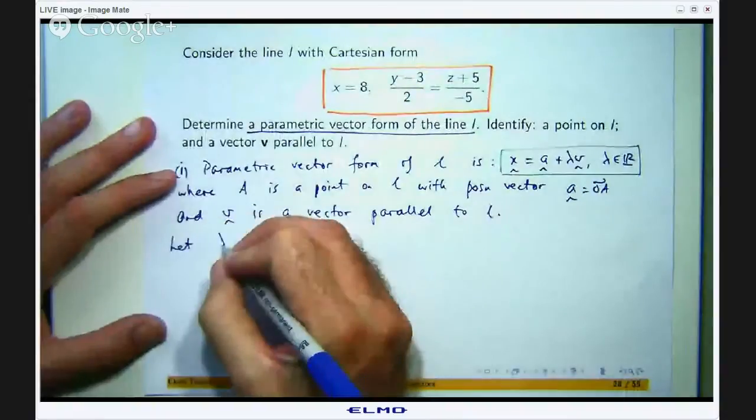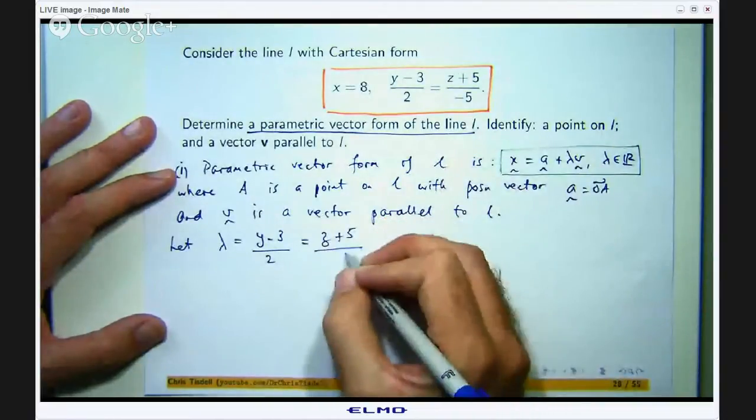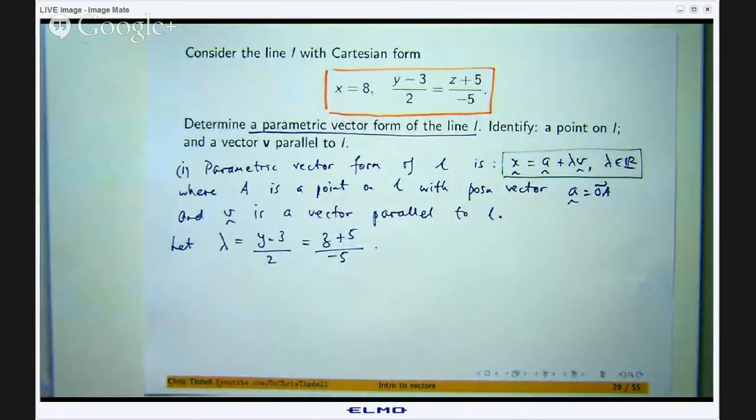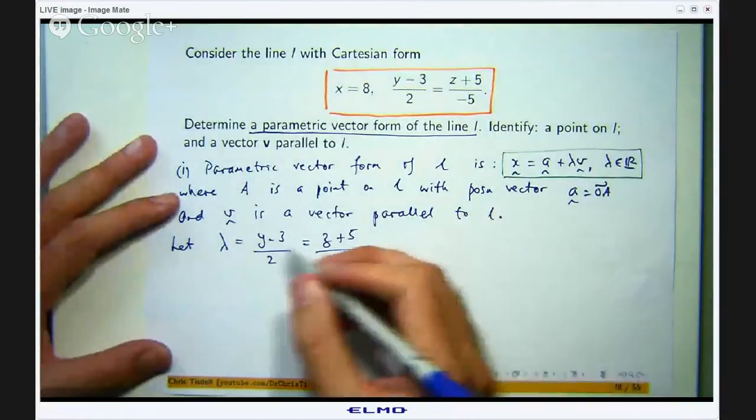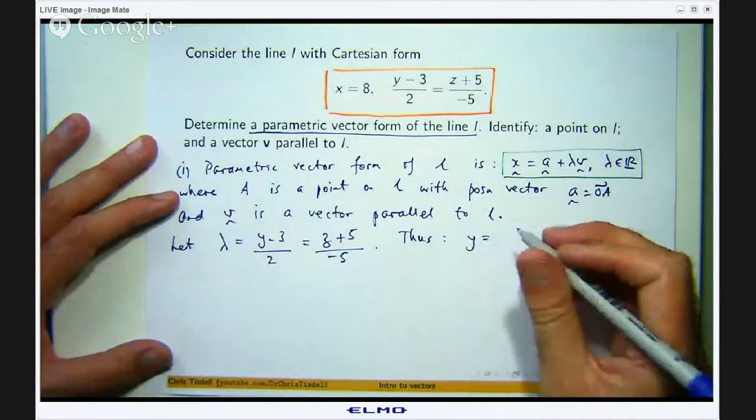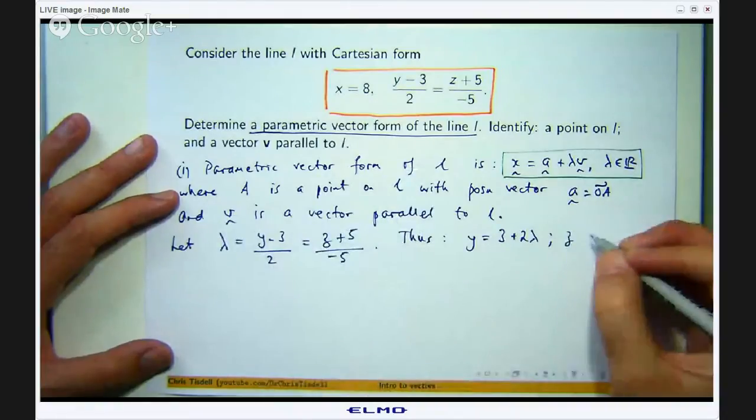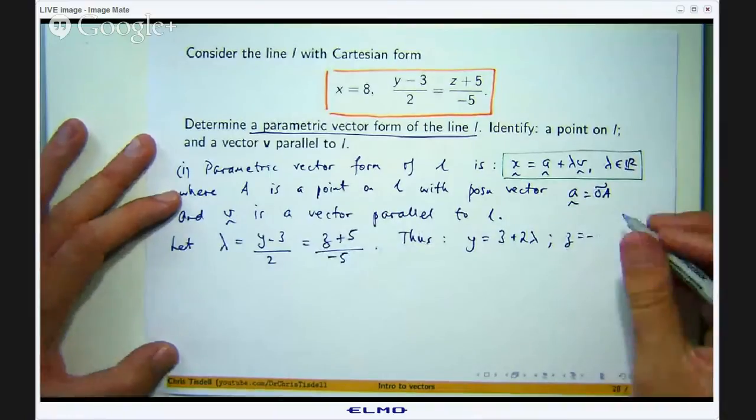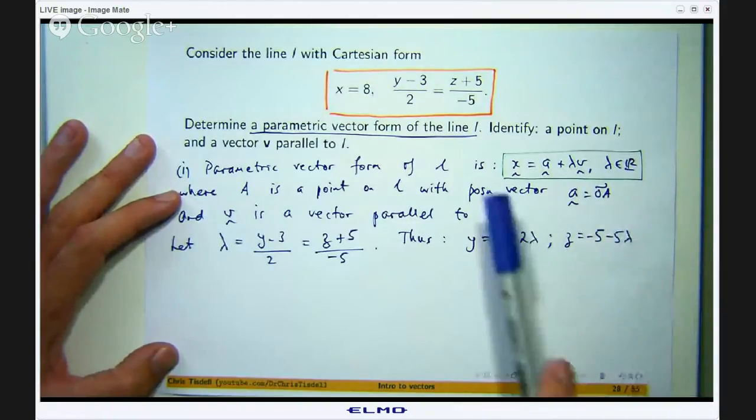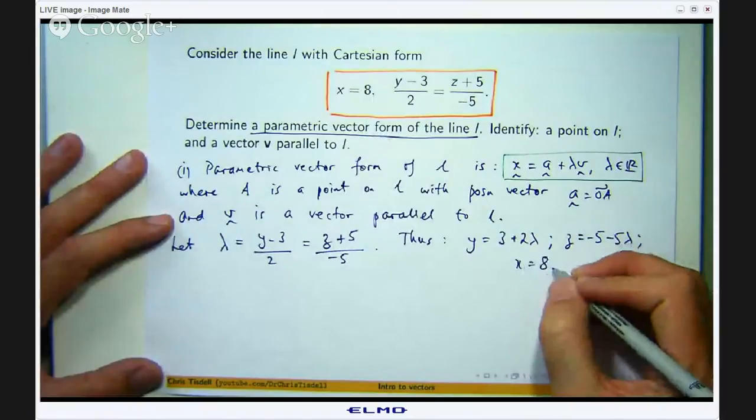So if I let lambda to be equal to y-3 over 2, I know that from here that is equal to z plus 5 all over negative 5. And what I am going to do is rearrange this to isolate the y and the z. So here essentially I have got two equations. If I bring the 2 up there and bring the negative 3 to the other side, I will get y isolated. And if I bring the negative 5 up there and bring the z isolated.